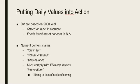Nutrient content claims describe the nutrients in food — for example, low in fat, rich in vitamin A, zero calories, or low sodium. All of these must comply with FDA regulations. For example, to claim that an item is low in sodium, there must be 140 mg or less of sodium per serving. If a food has more than 140 mg of sodium in one serving, it cannot make that nutrient content claim.